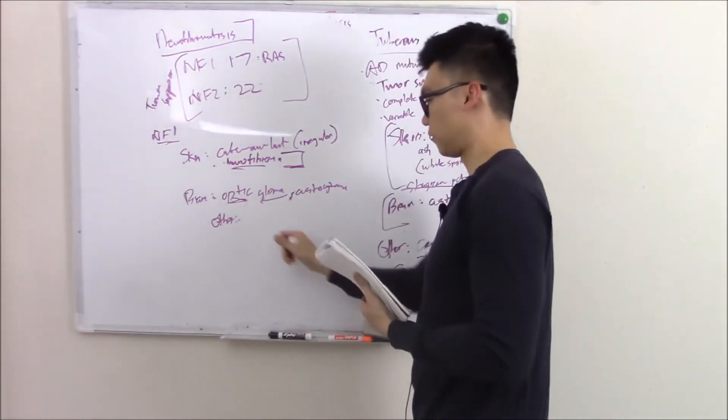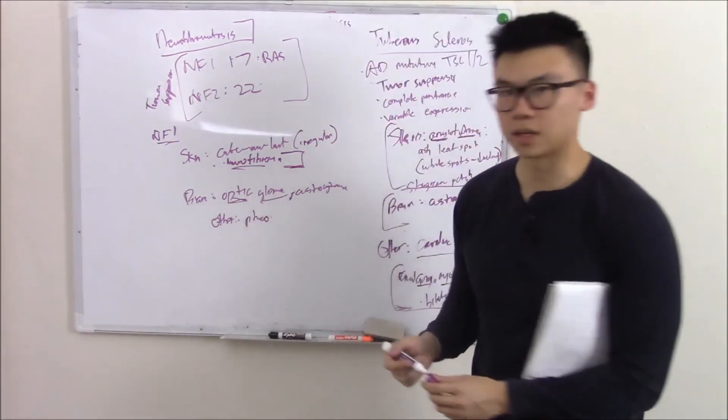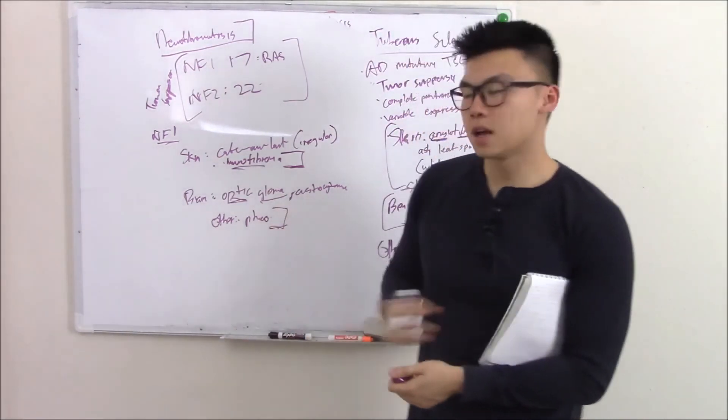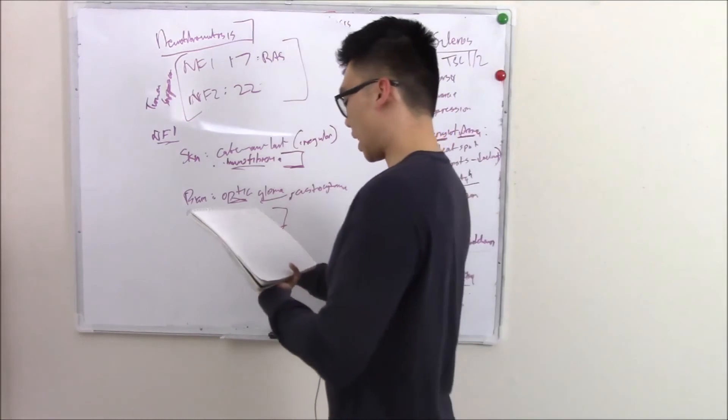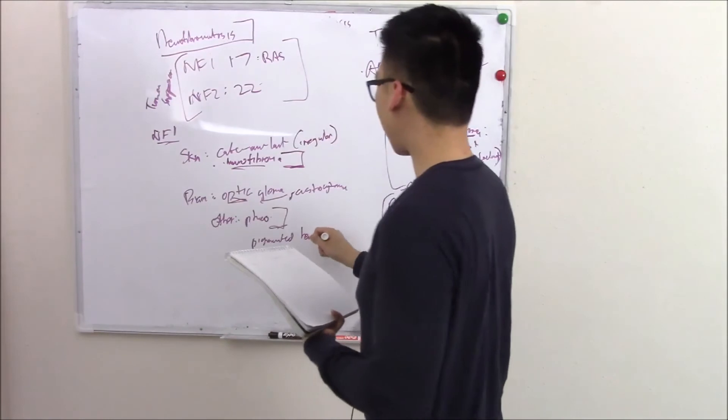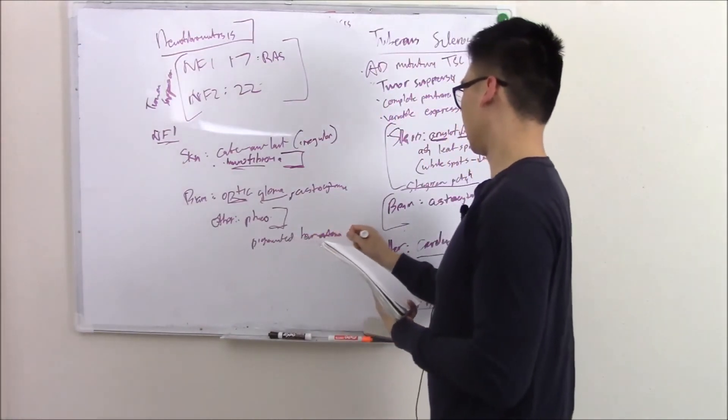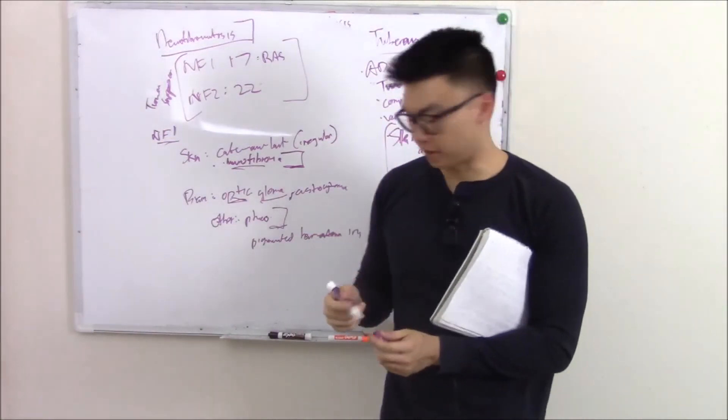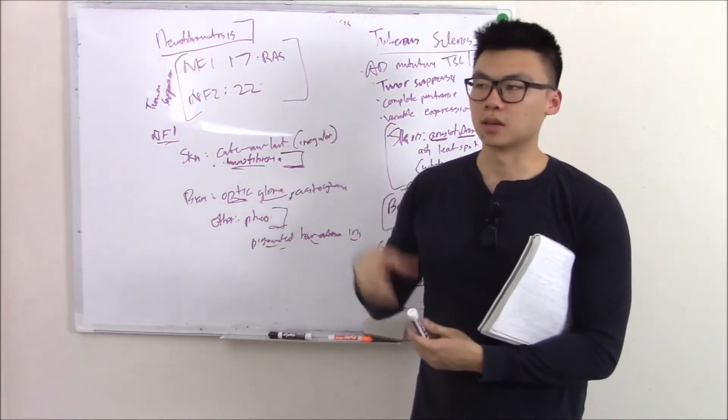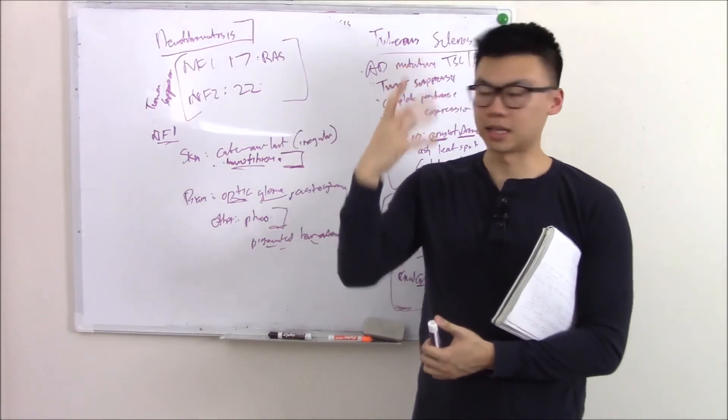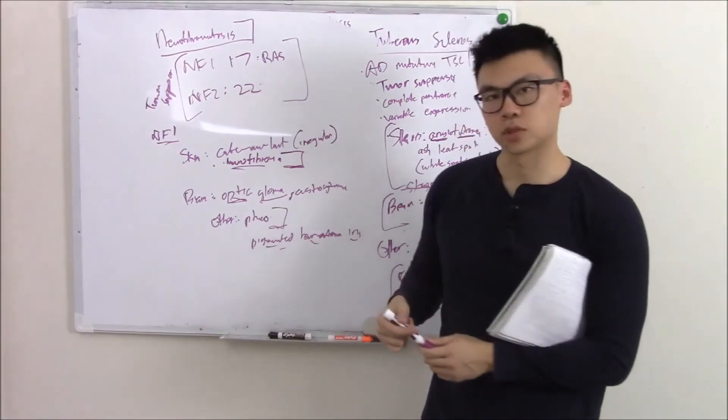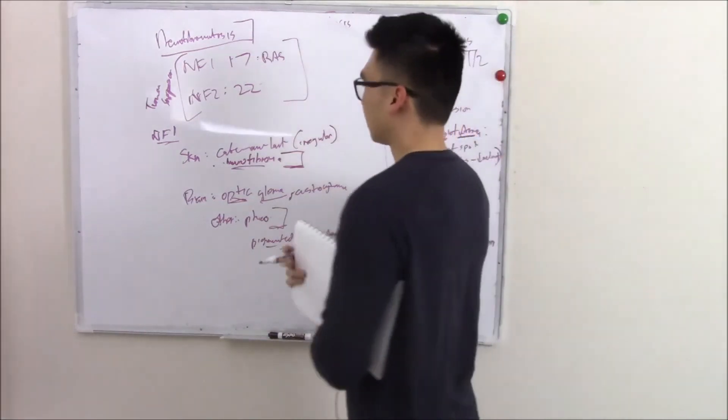Other manifestations, you can have pheochromocytoma. Pause the video and tell me everything you know about pheochromocytoma. Something else you can have: pigmented hamartomas on your iris. Your iris is the colored part of your eye, so if you have pigmented hamartoma of your iris, you have extra pigments. If someone has green eyes and they have this, they might have these red or blue spots in your eyes. That's NF1.